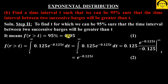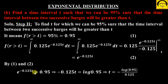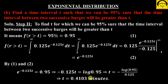This quantity is equal to 0.95, so these two are equal. Take log both sides: apply log, so −0.125t = ln(0.95), so t = 0.4103 minutes is the answer. Iska matlab 95% sure hoga ki time jo hai woh greater than 0.4103 minutes hoga. Isko 60 se multiply kar lo to seconds mein nikal jaayega — approximately 22 ya 23 seconds aayega.